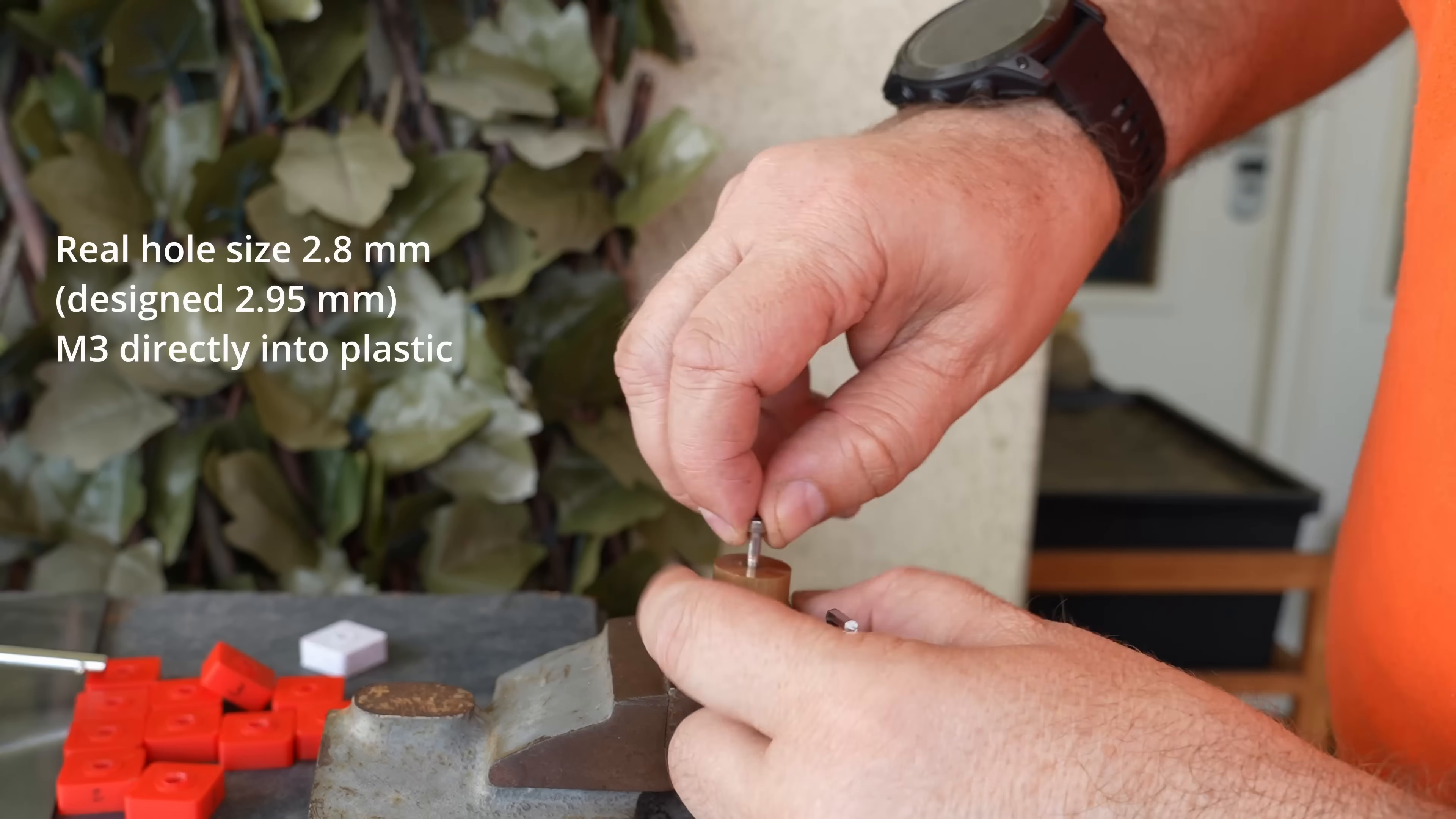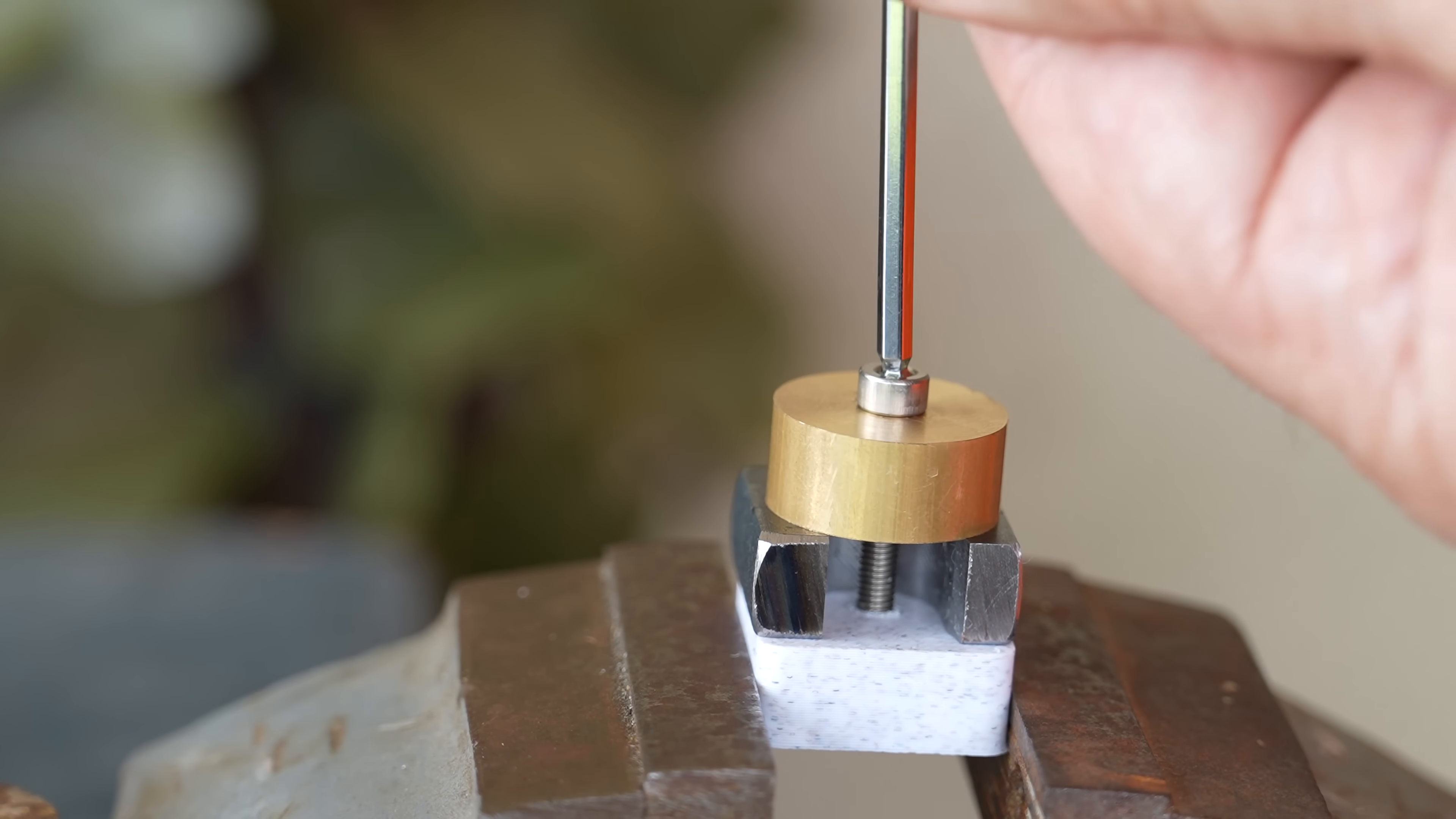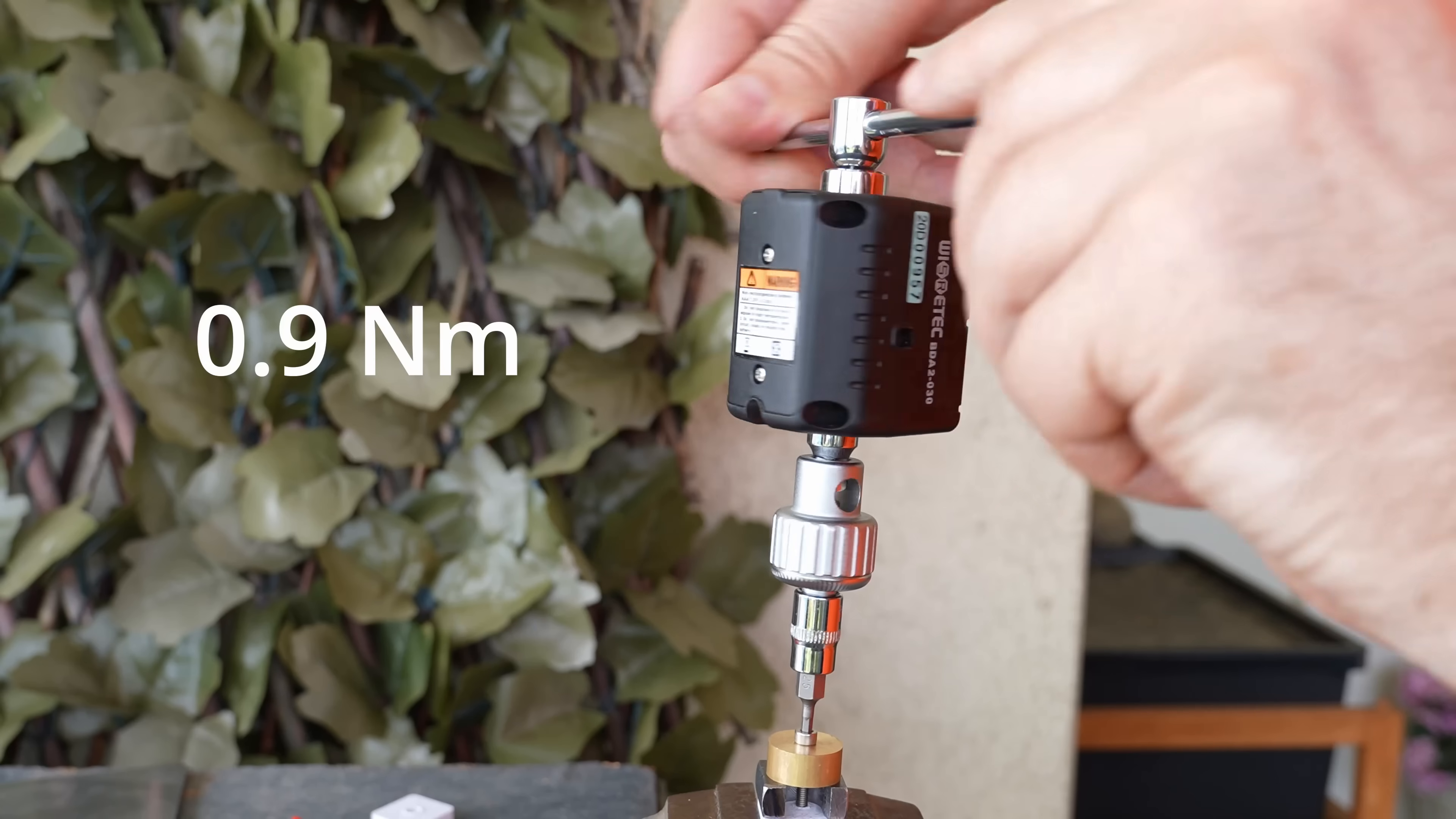And this method I'm using very often exactly with M3 threads. I printed here a 2.8 mm hole and then this bolt will cut the thread into it, and for this feeling it is stronger.